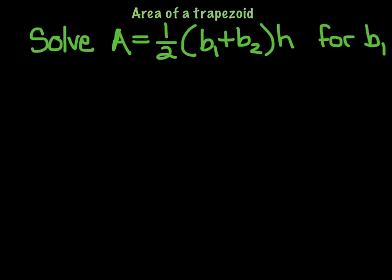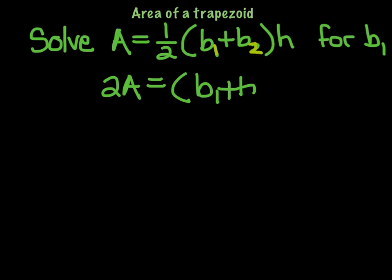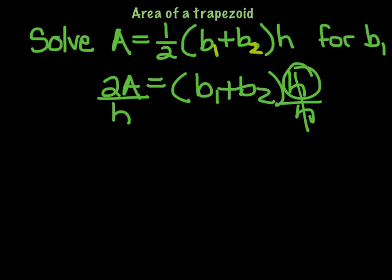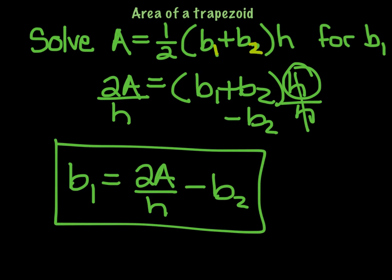Here's another one. We're going to use the formula for the area of a trapezoid. We're going to solve A = ½(b1 + b2) × h — note that b1 and b2 are subscripts, not exponents — meaning the first base and the second base, times h. We're solving for b1. First, get rid of the one-half just like before, so 2A = (b1 + b2) × h. Working order of operations backwards, next we divide both sides by h, giving 2A/h = b1 + b2. Then subtract b2: b1 = 2A/h − b2.